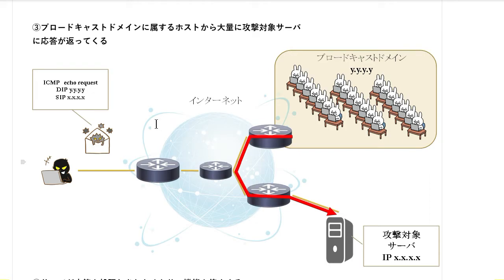その3、ブロードキャストドメインに属するホストから、大量に攻撃対象サーバーに応答が返ってくることになります。ネットワークスペシャリストを受験されようとしている皆様なら想像つくと思いますけれども、ブロードキャストアドレスに対して通信すると全員が対象になるので、全員が通信を返そうとしてくるんですね。